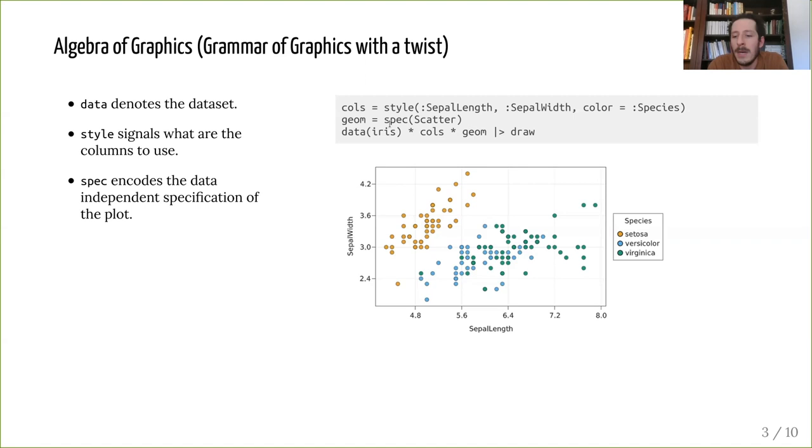And then the data-independent part is that it's a scatter plot. So I simply say that spec is a scatter. Then, once I multiply all these things together, I get my plot specification, which I can then draw.